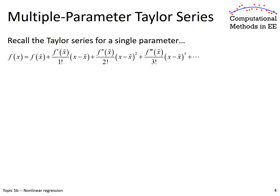The way we will convert our set of nonlinear equations to a set of linear equations is using the Taylor series. Since we have multiple parameters, we need to learn how to do the Taylor series with multiple parameters. We're going to drop all the higher order terms. Up front, we have a single-parameter Taylor series — probably something you've seen in your background. It's a way of approximating f with a series of terms, written about a value x-tilde. We have the first order term, second order term, third order term, and so on — an infinite number of terms.